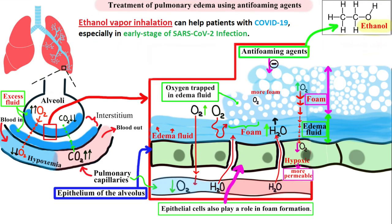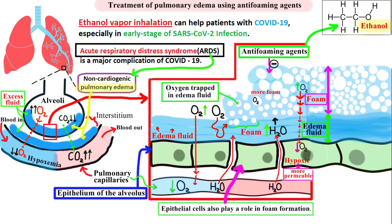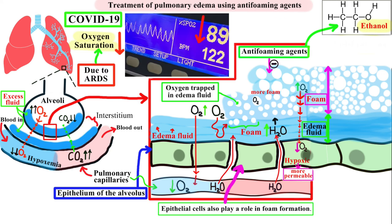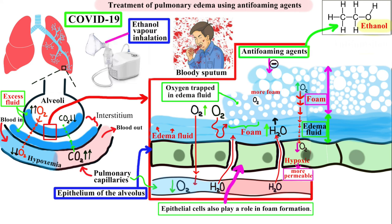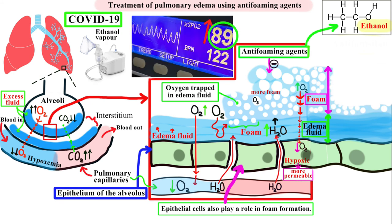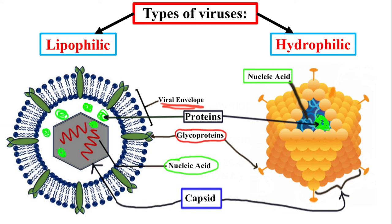Ethanol vapor inhalation can help patients with COVID-19, especially in early stages of SARS-CoV-2 infection. Acute Respiratory Distress Syndrome, or ARDS, is a major complication of COVID-19 with subsequent formation of non-cardiogenic pulmonary edema. A lot of foam is produced in the alveoli, worsening oxygenation. Patients can even have bloody sputum formation. Ethanol vapor inhalation reduces surface tension on the alveoli and markedly decreases foam formation with improvement of oxygenation. Ethanol can also act as a virucidal agent.